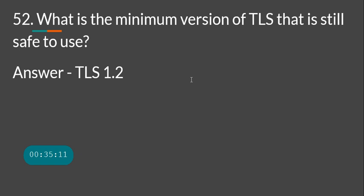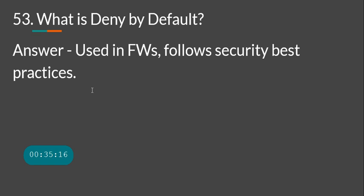What is deny by default? This is commonly used in firewalls — you create a rule that denies everything by default, and then only write specific allow rules when a particular connection is needed. If there is no explicit allow rule, nothing is permitted. That is called deny by default.